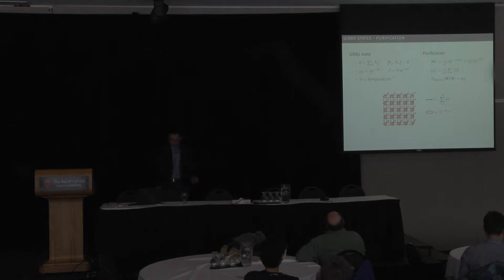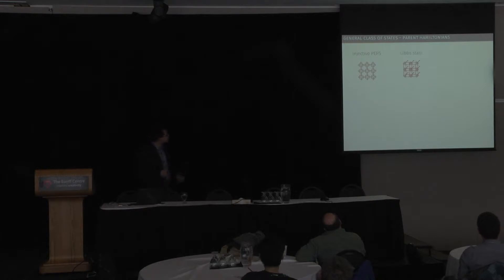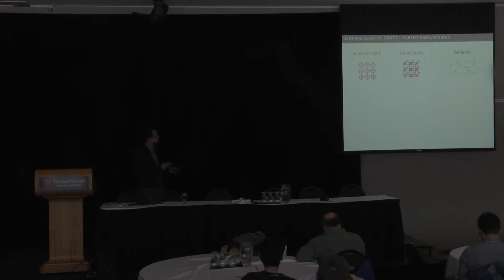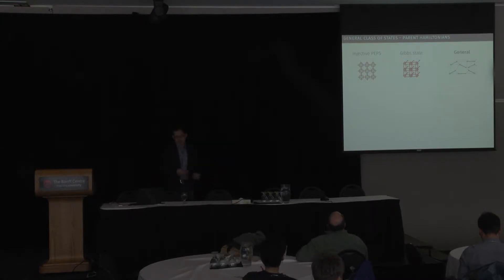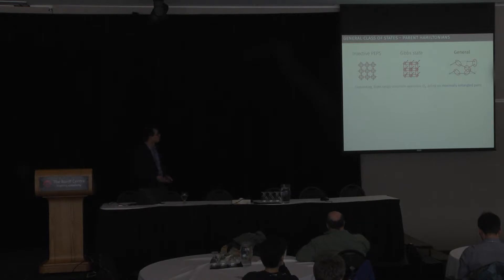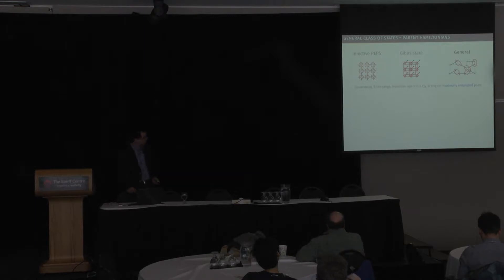So the two classes of states I'm considering are: first, injective PEPS; second, Gibbs states of local commuting Hamiltonians. More generally, you can imagine a slightly more general setup where you take some graph of well-defined spatial dimension, distribute maximally entangled states on this graph, and consider commuting, finite-rate, local, and invertible operators acting on these pair states.